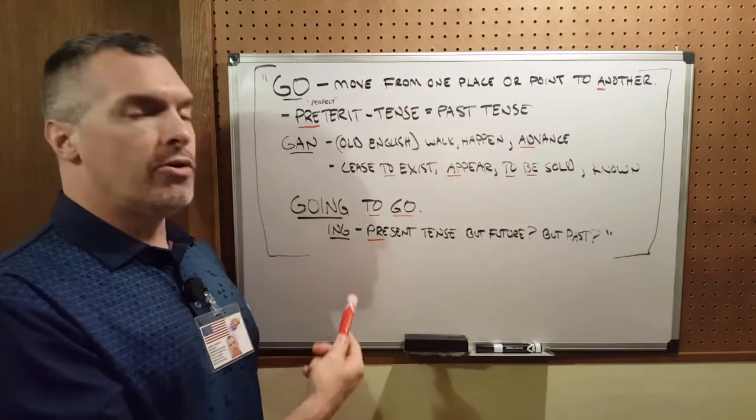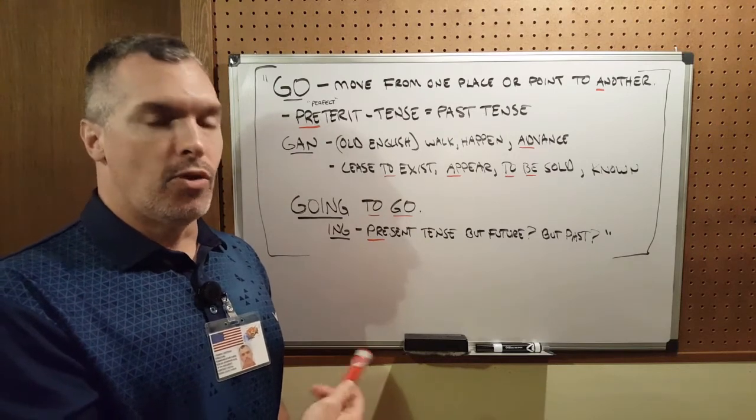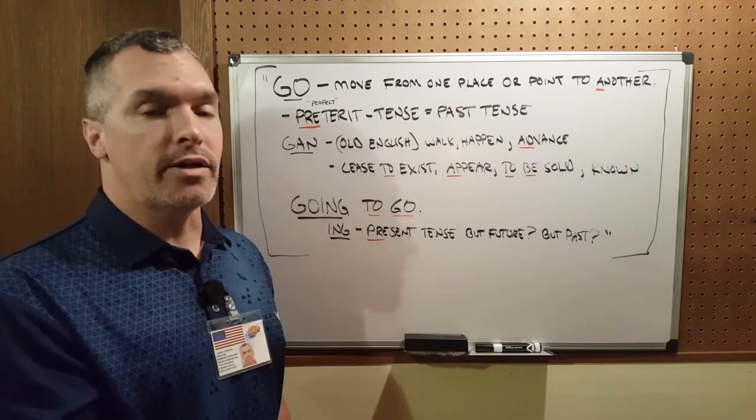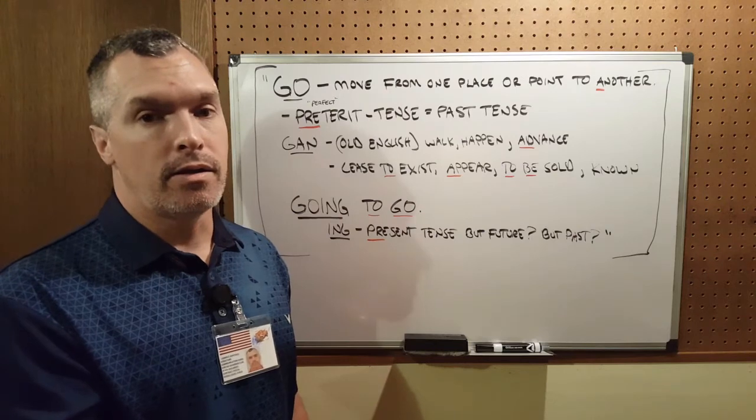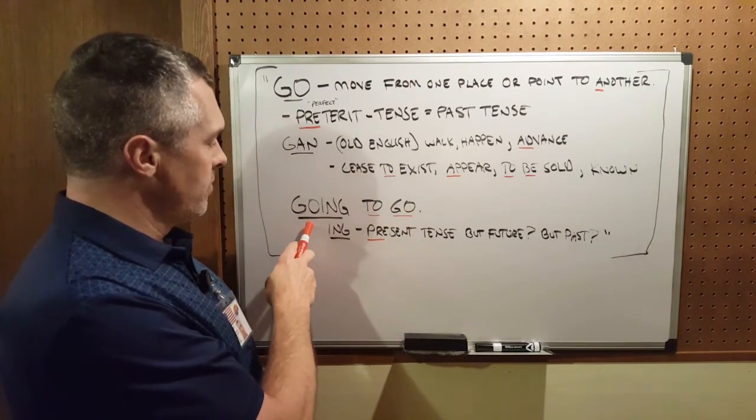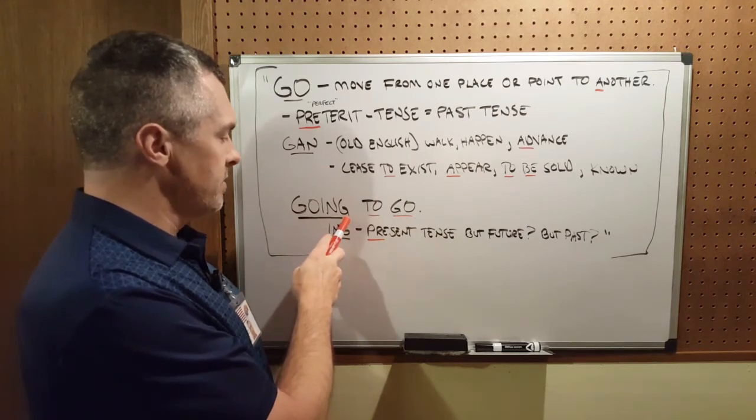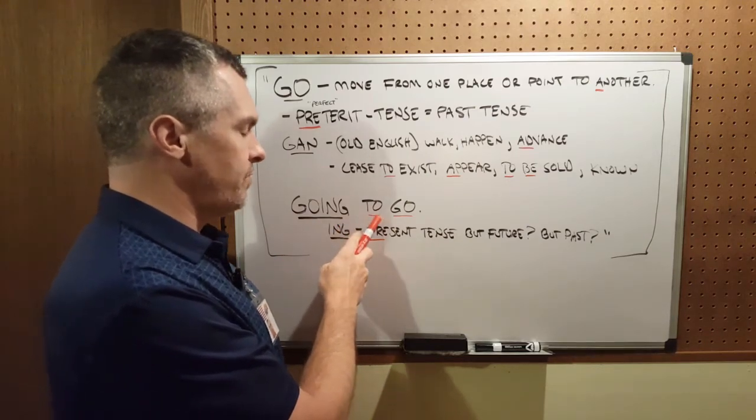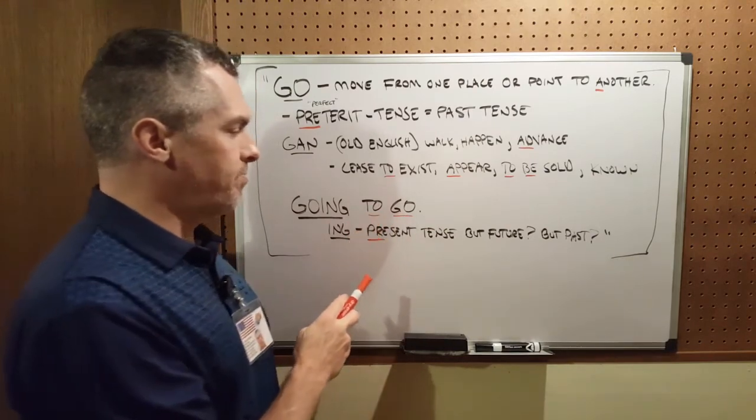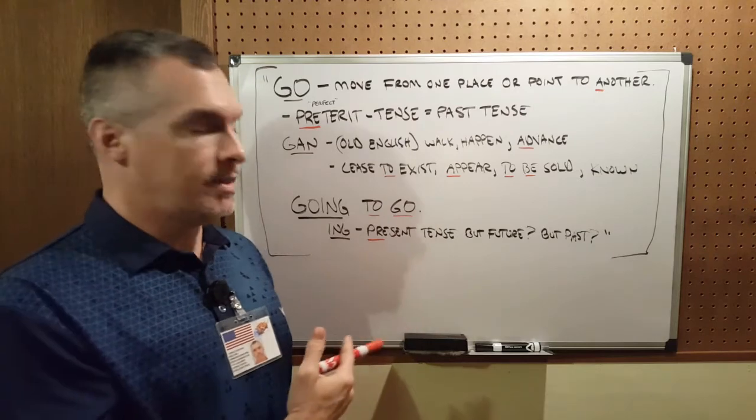So we have the sentence, I'm going to go, kind of similar to I'm running to run, or I'm talking to talk. So you have go, which is past, ing, which is present, and you have to, which is future, and you have go, which is past. So you're covering all the time traveling bases in that sentence.